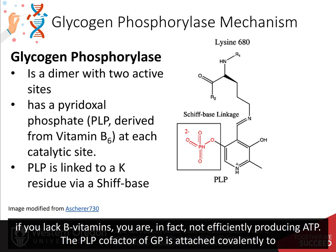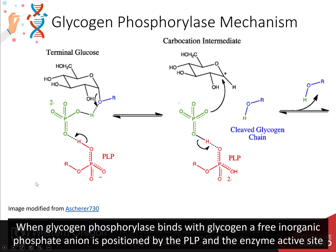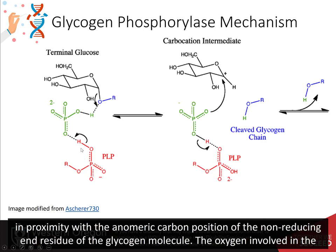The PLP cofactor of glycogen phosphorylase is attached covalently to the enzyme through a Schiff-base linkage with a lysine residue. When glycogen phosphorylase binds with glycogen, a free inorganic phosphate anion is positioned by the PLP and the enzyme active site in proximity with the anomeric carbon position of the non-reducing end of the glycogen molecule.